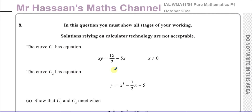This question is about these curves. Curve 1, C1, has equation xy equals 15 over 2 minus 5x, where x cannot be 0. Curve 2 has equation y equals x cubed minus 7 over 2x minus 5.